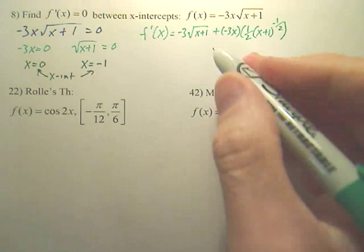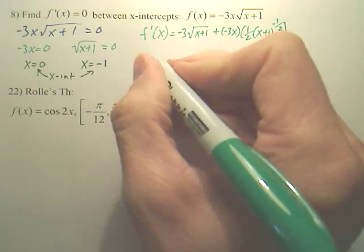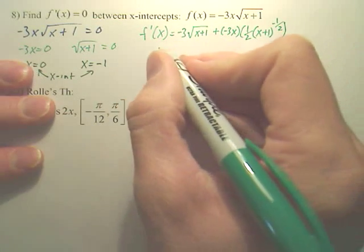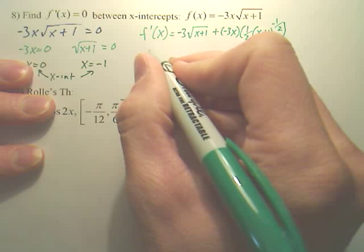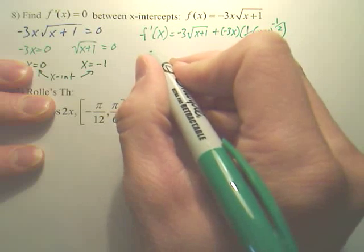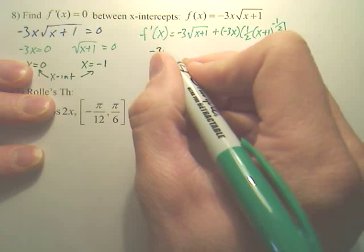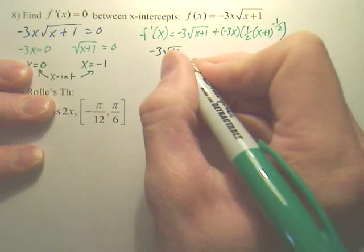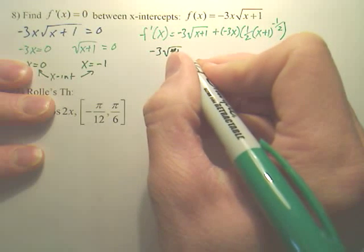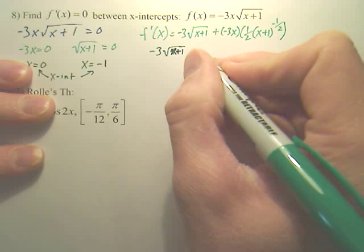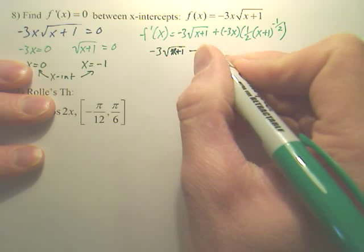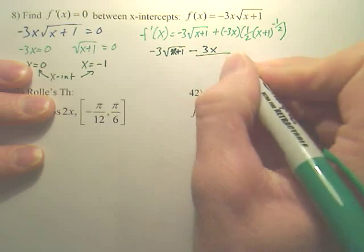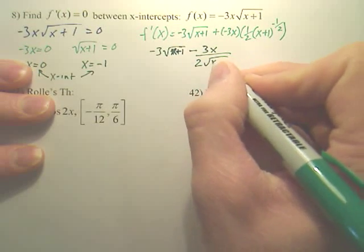I'm now going to set this equal to zero, and when I do this, it looks like, it's kind of a nasty one, you're right. You get negative three square root of x plus one